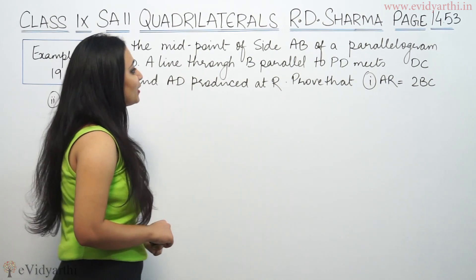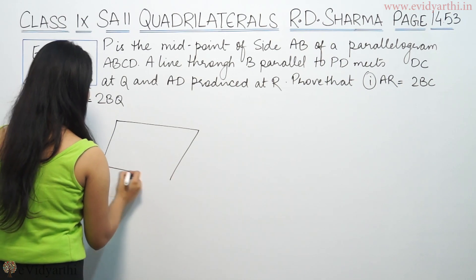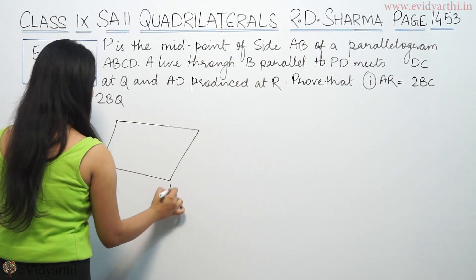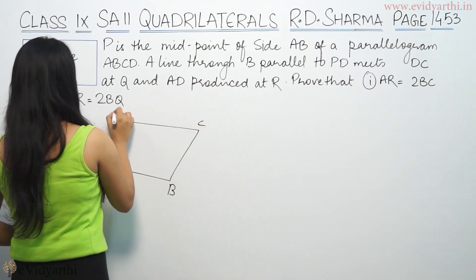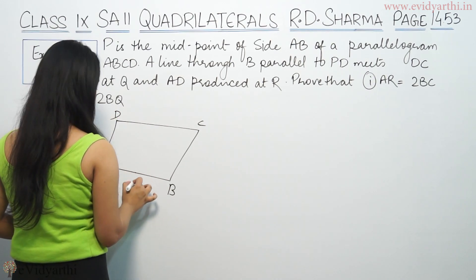P is the midpoint of side AB of a parallelogram ABCD. So this is ABCD. P is the midpoint of side AB. The midpoint is P.